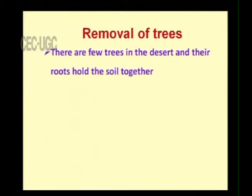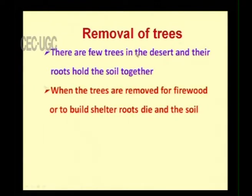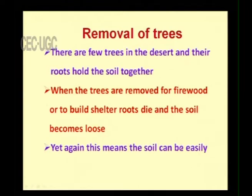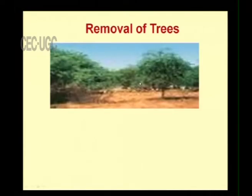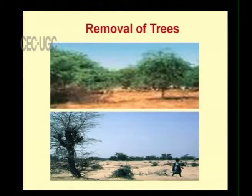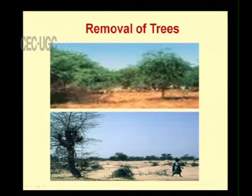The next factor is the removal of trees. There are few trees in the desert, and their roots hold the soil together. When trees are removed for firewood or to build shelter, the roots die and the soil becomes loose, meaning the soil can easily be blown or washed away. When these trees are taken one by one and roots are also lost, there is nothing to bind the soil together, and when air passes through, it takes all the soil, making the land a desert.